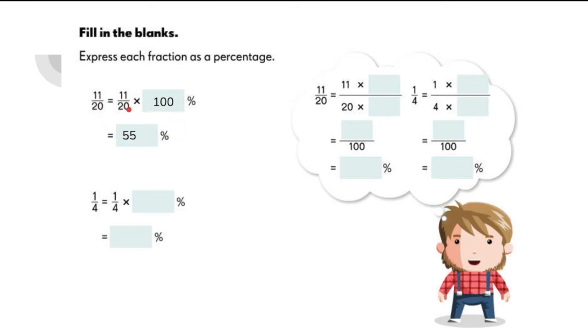So the fastest one is to multiply the given question by 100%. So if we want to convert 11 out of 20, just multiply the fraction by 100%. And this will give us 55%.